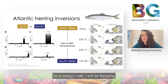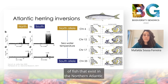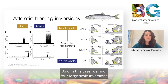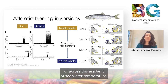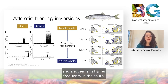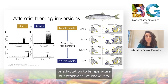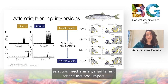In today's talk, I will be focusing on the Atlantic herring, which is a species of fish that exists in the North Atlantic. We find four large-scale inversions that are segregating across a gradient of seawater temperature. One of the inversion haplotypes is at higher frequency in the North and another is at higher frequency in the South. We think these inversions might be important for adaptation to temperature, but otherwise we know very little about their evolutionary history, selection mechanisms, and functional impact.